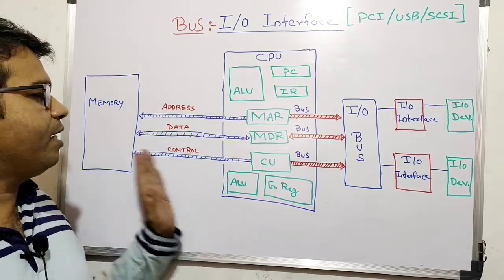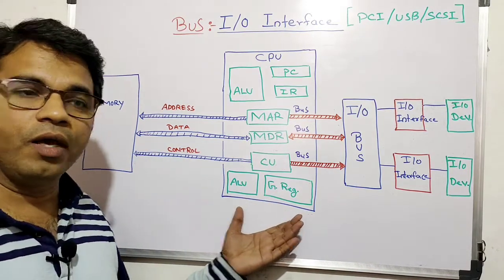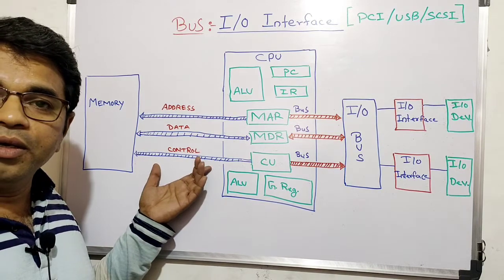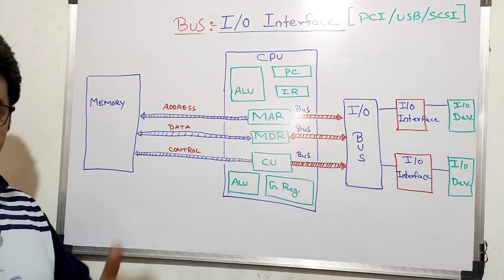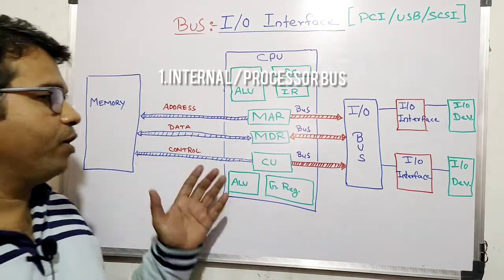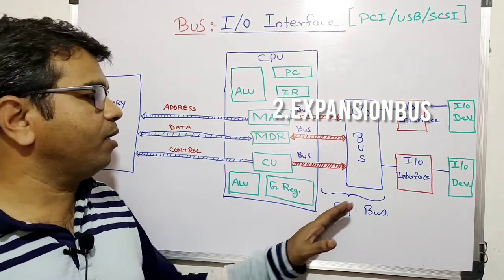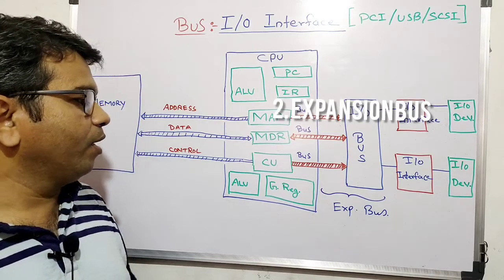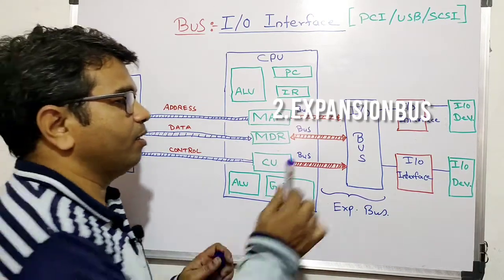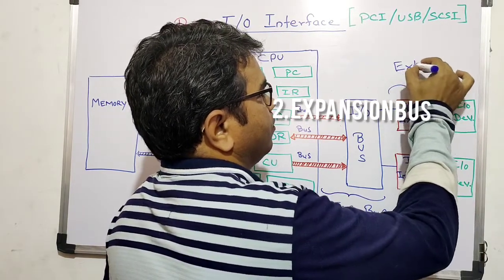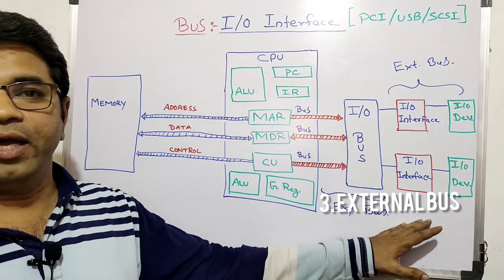Overall, we have divided the buses in the system into three different categories. The first is the bus which connects the CPU and the memory — this is the topmost bus inside the system, called the internal bus, also known as the processor bus. The second is the expansion bus, which connects the motherboard and the slots for PCI and SCSI devices. The third category is the external bus, which connects the actual devices to the system.